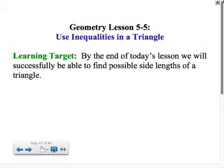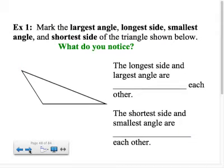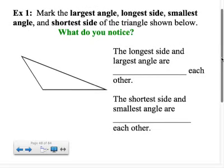In section 5, we're going to look at using inequalities within a single triangle. Example number 1 says mark the largest angle, the longest side, the smallest angle, and the shortest side of the triangle shown below. What do you notice?